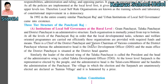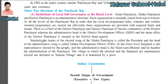The chief of the District Panchayat and its various committees has the administrative head called the District Development Officer, abbreviated as DDO — Jilla Vikas Adhikari. The main office of the District Panchayat is situated at the district headquarters. Similarly, the leader of the elected wing of the Taluka Panchayat is called the president, and the head of the administrative wing is called the TDO — Taluka Development Officer, or Taluka Vikas Adhikari.